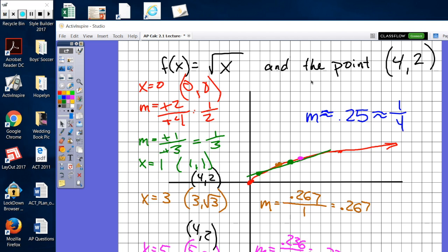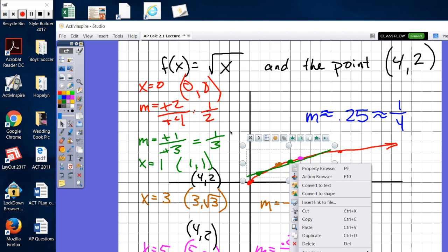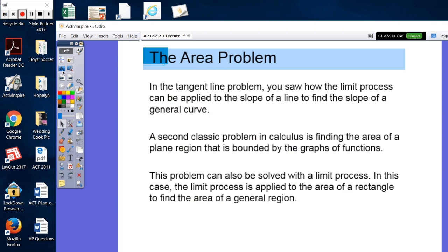And the closer that we got to that point four comma two, the more accurate our secant line slope was to where we could use it to approximate the actual value of our slope. So our x's approached a specific number. The x's start here, it was zero, and then we moved it along our line until we got closer and closer to that value of four.